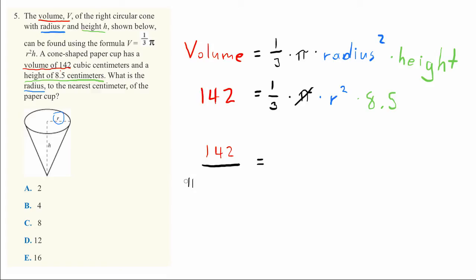So now we have it over pi, and let's divide by 8.5 as well. Finally, dividing by one-third is the same as multiplying by 3, so let's multiply by 3. All of this equals R squared - we've just rearranged the equation.